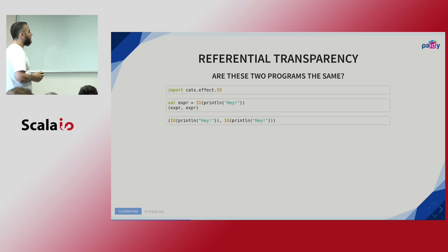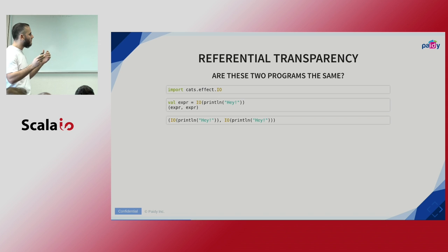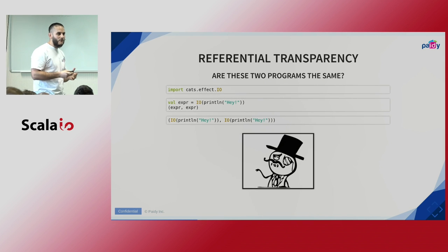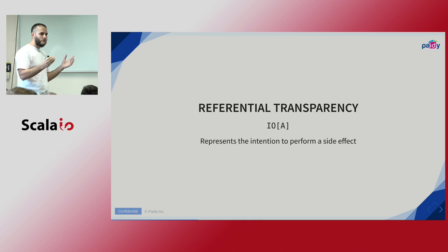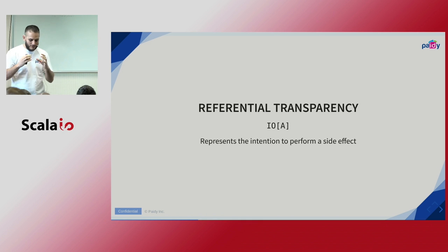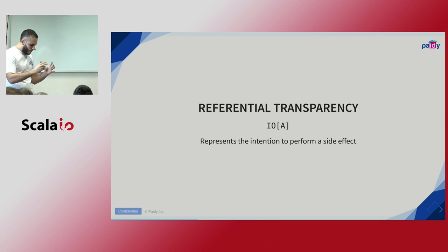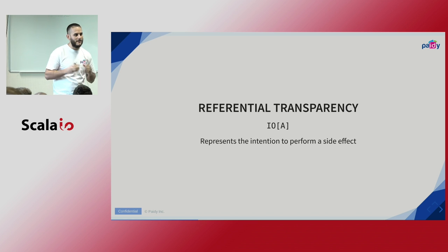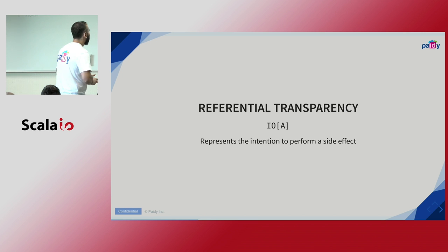How about Cats Effect IO? If we perform substitution again and replace the expression by its bound value, the meaning of the program is still the same. Why? Because IO represents the intention to perform the side effects, but it's just a pure value — it doesn't execute anything. So it can be composed. You can compose different small pieces of a program into bigger programs, and it gives you local reasoning. You can reason about small pieces and understand the whole.